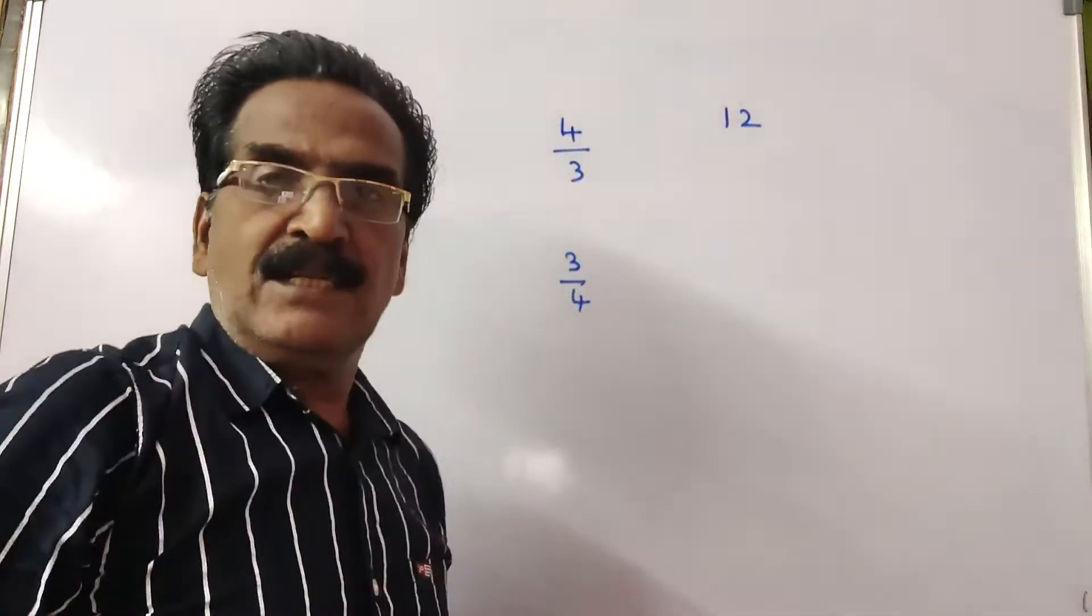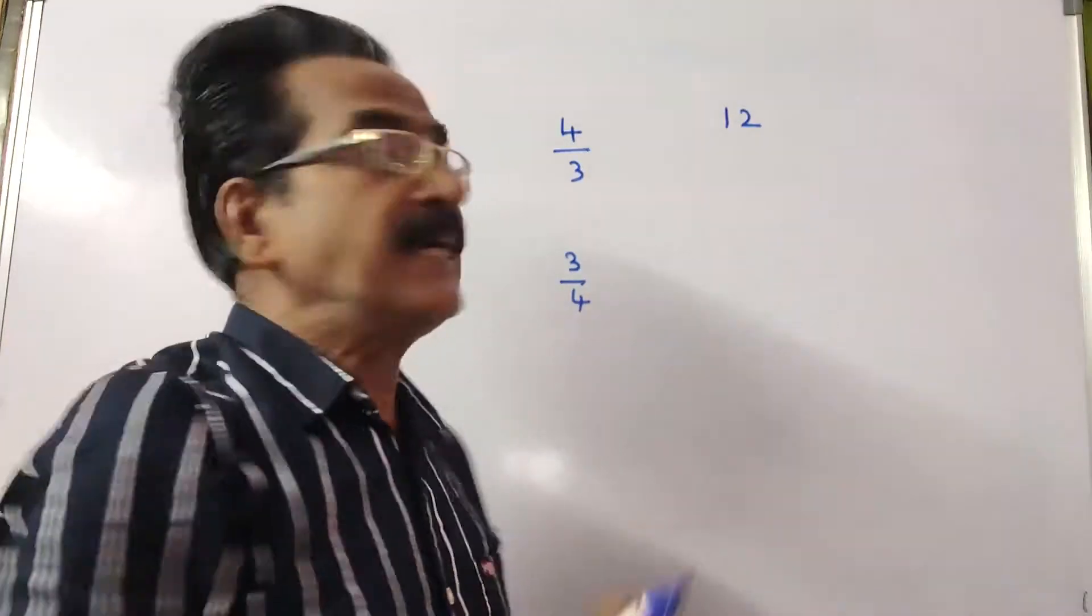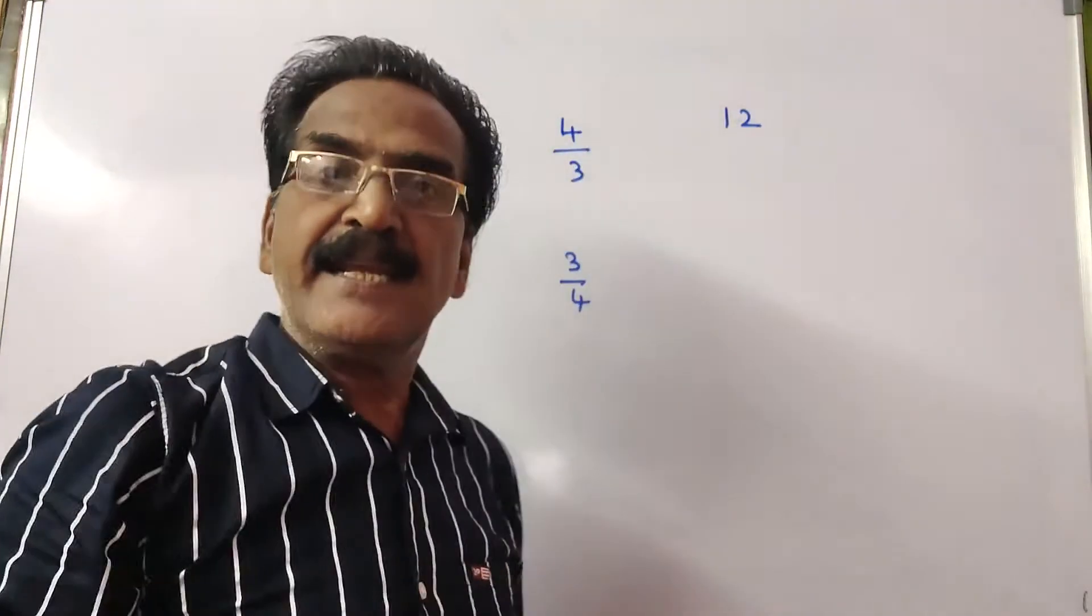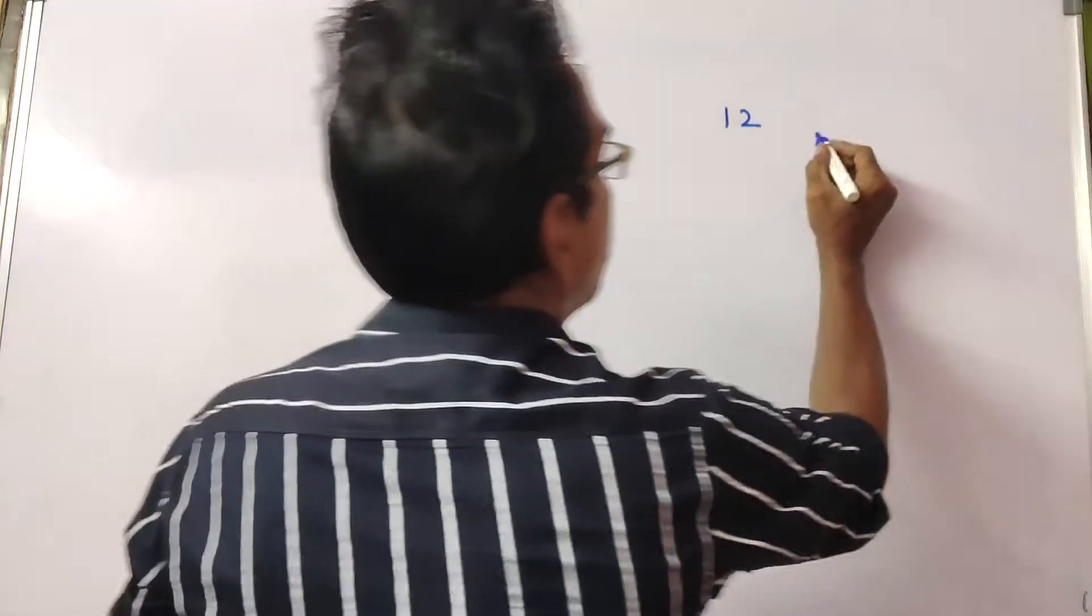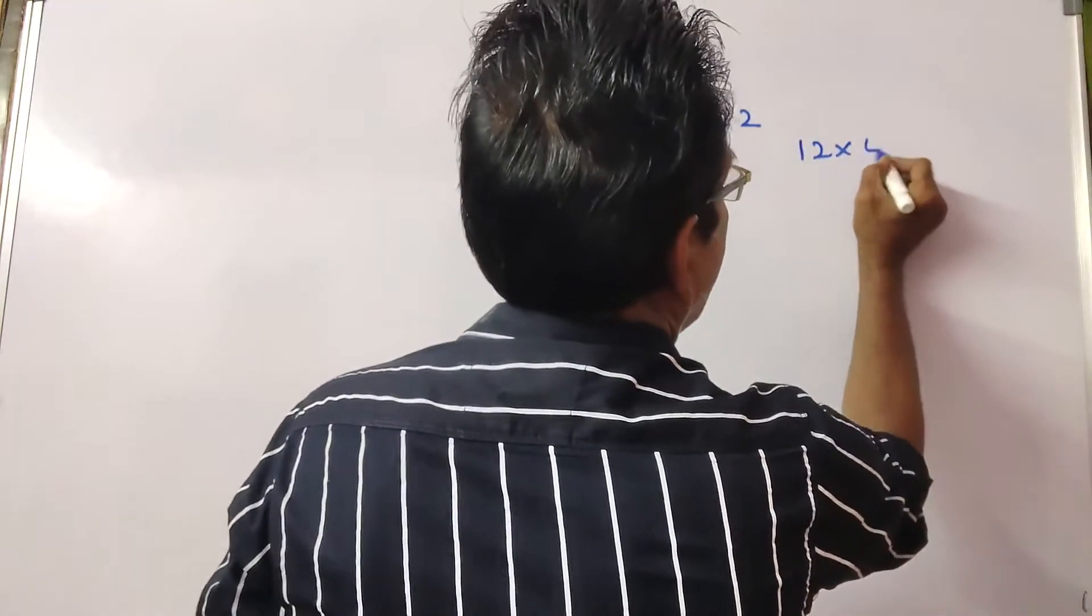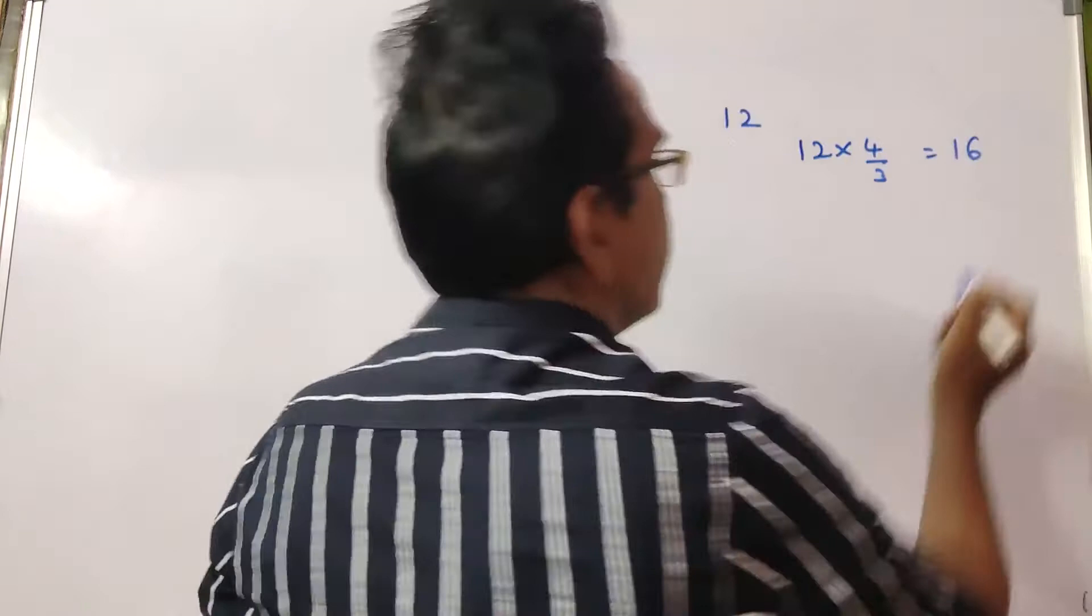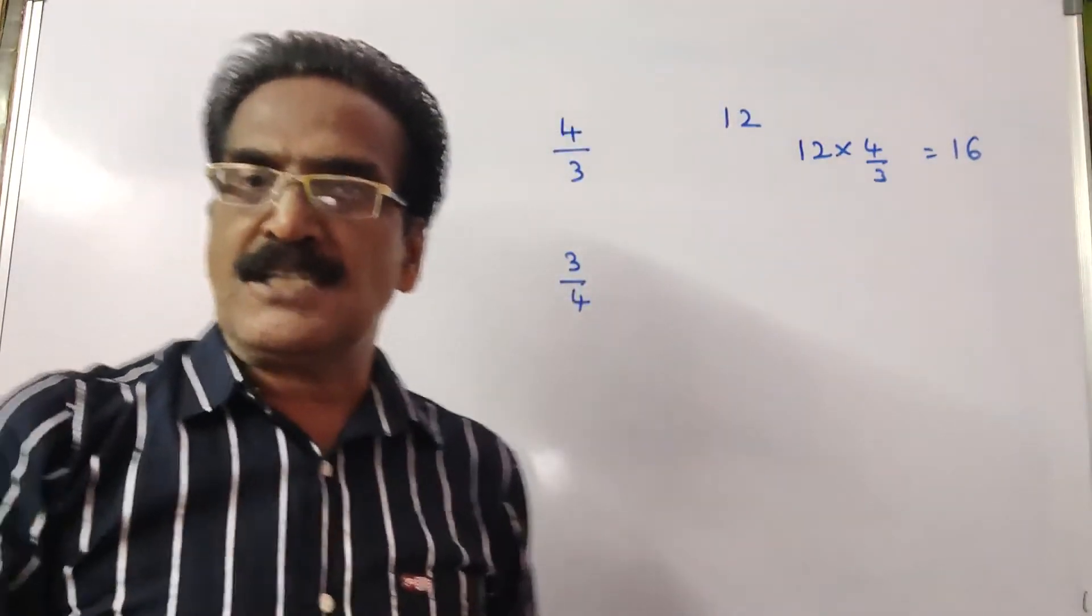The number is 12. If he had multiplied the number with 4 by 3, he would have got 12 into 4 by 3, that is equal to 16.